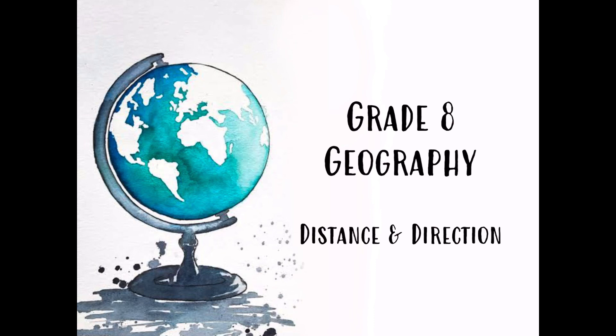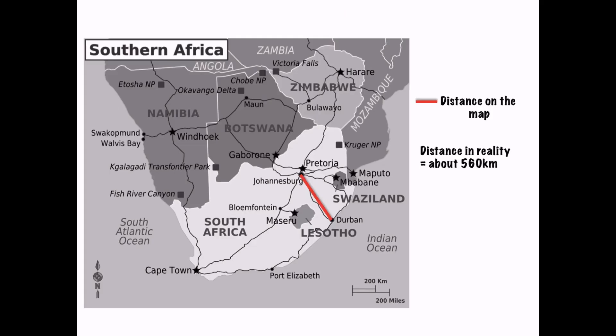Previously in the slides we discussed what a map is and the scale, and I quickly just want to touch on scale again before we go into distance and direction. In this map of South Africa you can see that the distance between Johannesburg and Durban on this slide, if we measured it with our ruler, that little red line, it would only be a few centimeters long, but we know that in real life the distance between Johannesburg and Durban is about 560 kilometers. So remember, maps have been reduced a certain number of times so that they can fit onto a piece of paper.